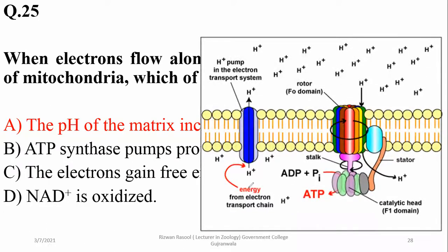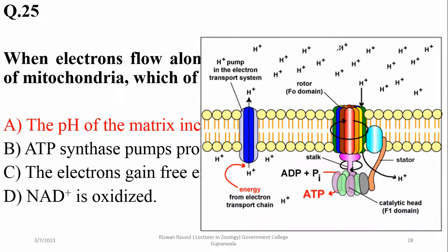As you can see, electrons are being pumped towards the lumen of the cristae — the intermembranous space — that is why the matrix becomes lower in hydrogen ions and the pH increases.